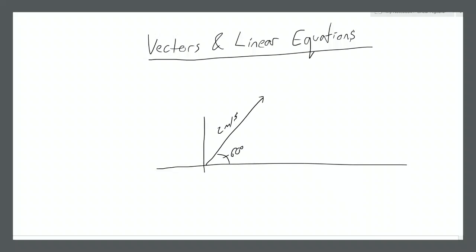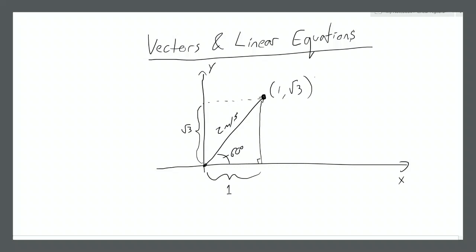This can also be described in Cartesian coordinates. If we imagine our x-axis and y-axis and the origin is the point from which the ball is thrown, knowing this magnitude and angle of 60 degrees we can construct a right angle triangle. We can calculate that the base will be equal to length 1 and the height will be equal to the square root of 3, approximately 1.7. So in our coordinate system this point will have coordinates (1, √3).